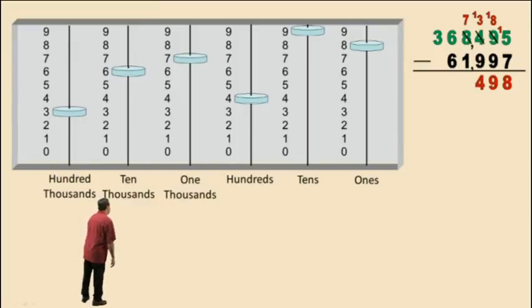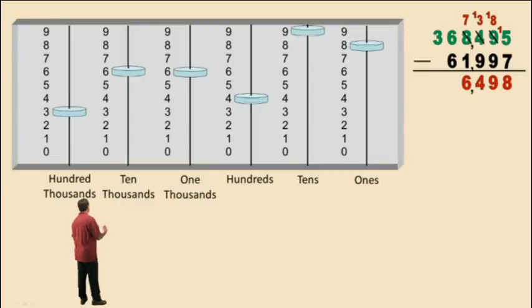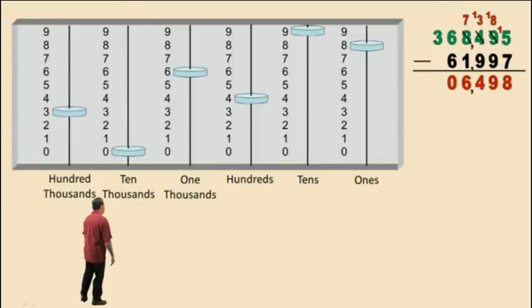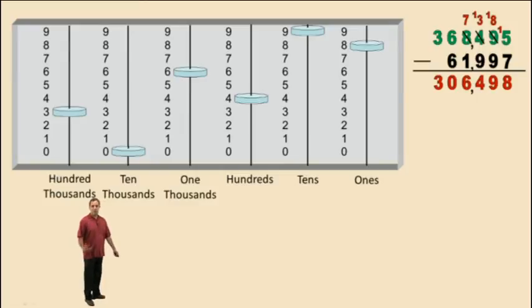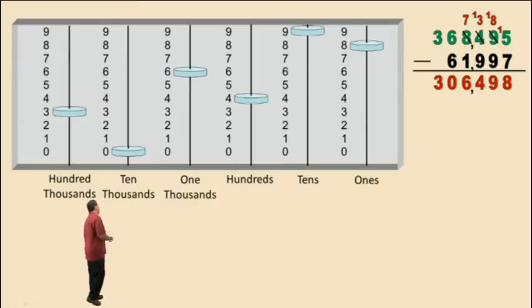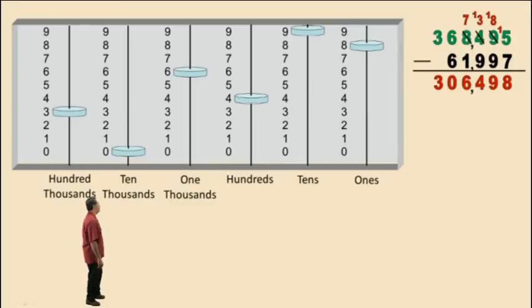Now in our thousands column, we have 7 subtract 1 — we can perform that — that's 6. 6 subtract 6 is 0, so we have 0 ten-thousands. And 3 subtract 0 is 3. So there's our result: 306,498.